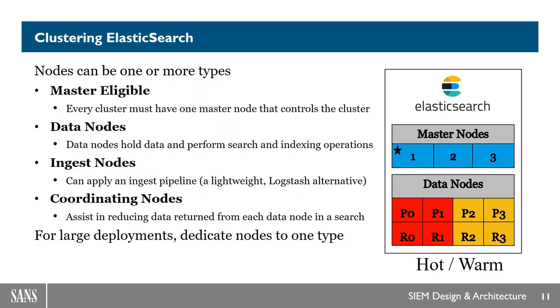In addition to that, there are also hot nodes and warm nodes. Hot nodes are data kept on SSD storage that you want to access very quickly, whereas warm nodes might be spinning disk nodes for older or less frequently accessed data.